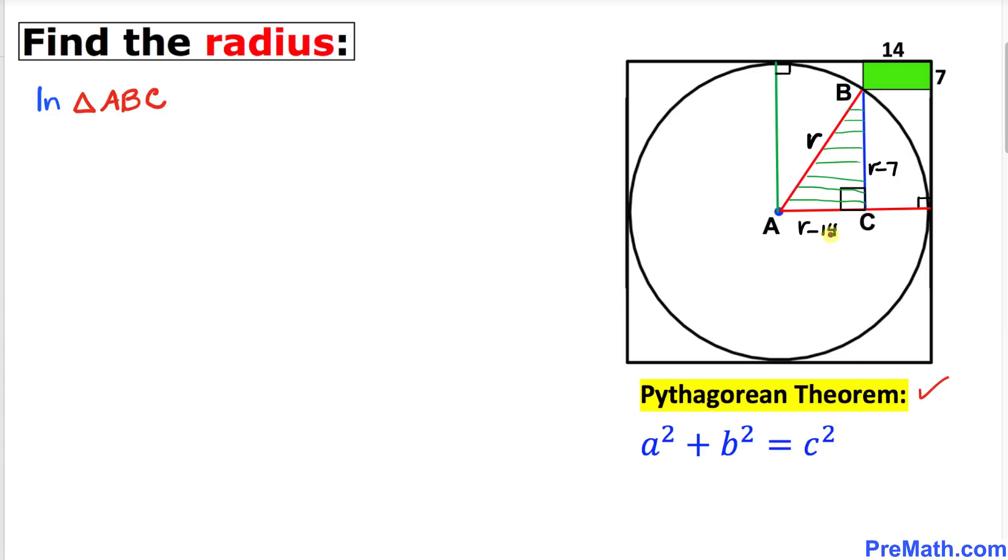If I call this horizontal side lowercase a, this vertical side b, and this longest leg our hypotenuse c, let's apply this Pythagorean formula on this triangle ABC. So this is going to become (r minus 14) squared plus (r minus 7) squared equals r squared.